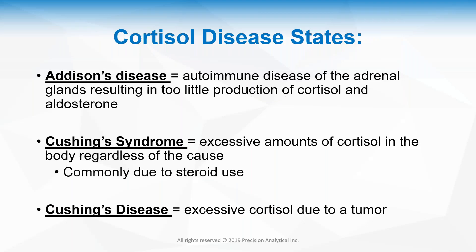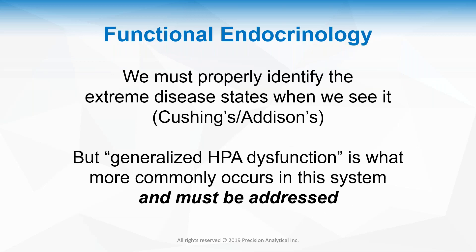When talking about cortisol disease states, please don't miss Addison's and Cushing's. Addison's disease is the autoimmune disease of the adrenal gland resulting in too little cortisol and aldosterone. Cushing's syndrome is the opposite — excessive cortisol regardless of cause, most commonly due to steroid use, while Cushing's disease involves a cortisol-producing tumor. In functional endocrinology, generalized HPA axis dysfunction is what more commonly occurs and must be addressed.